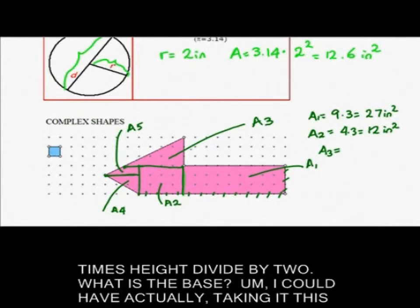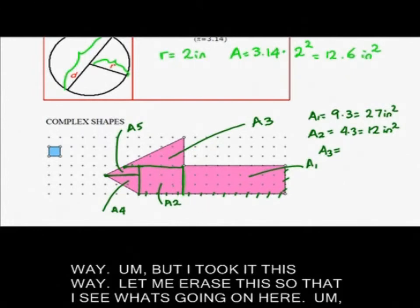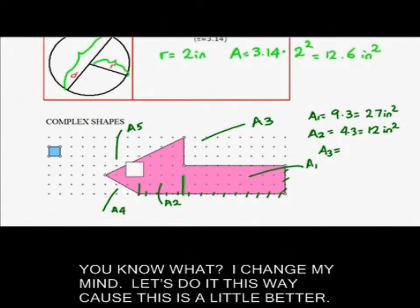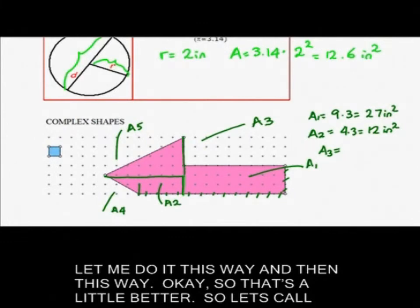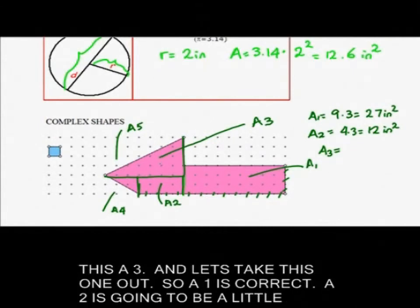Let's do A3. A3 is going to be base times height divided by 2. What is the base? I could have actually taken it this way, but I took it this way. Let me erase this so that I see what's going on here. You know what? I changed my mind. Let's do it this way. Because this is a little better. Let me do it this way, and then this way. So that's a little better. So let's call this A3. And let's take this one out. So A1 is correct.